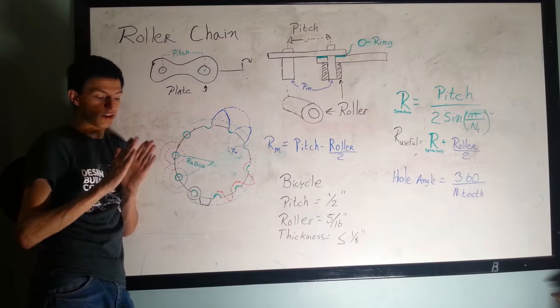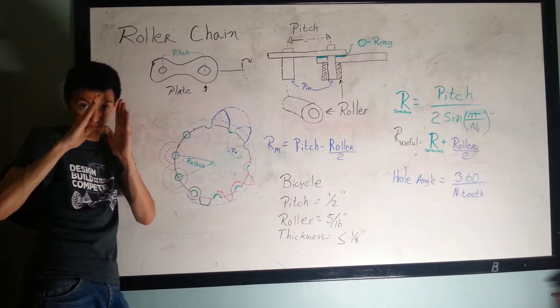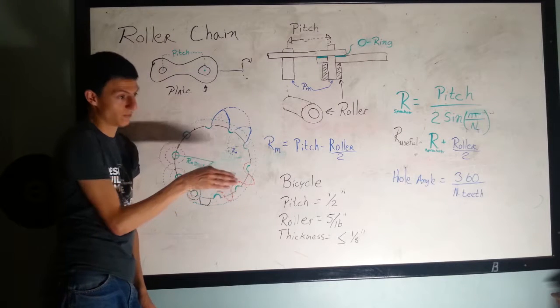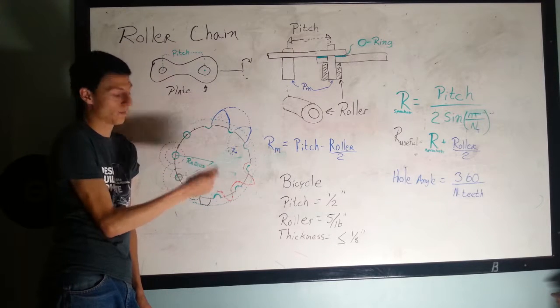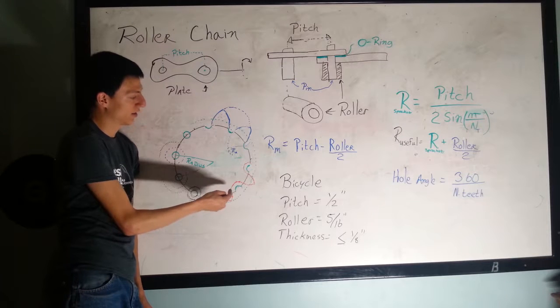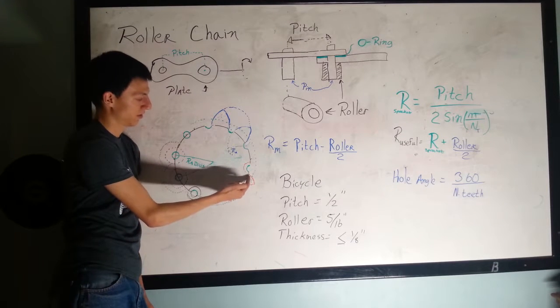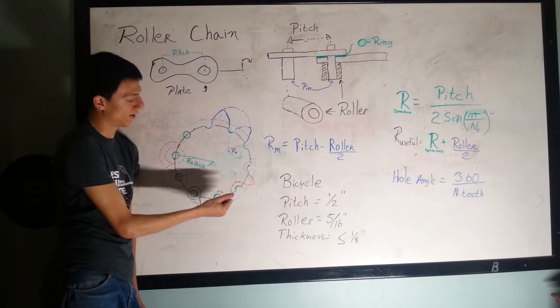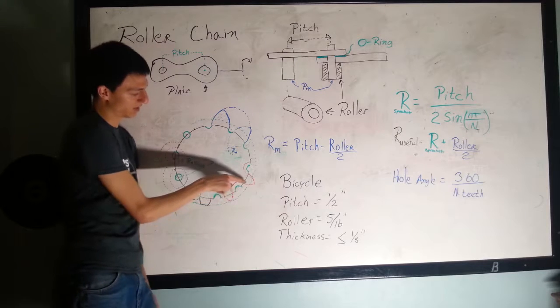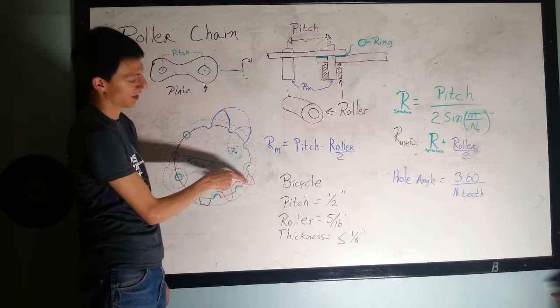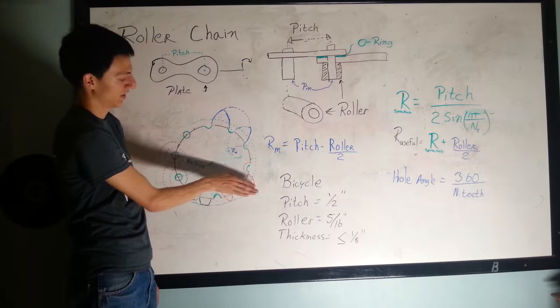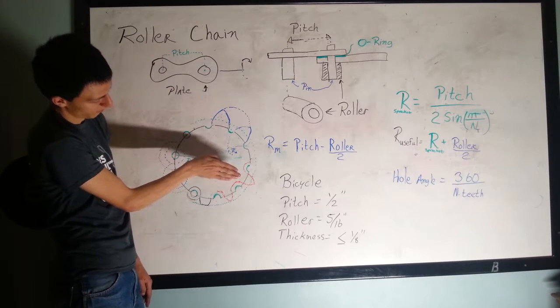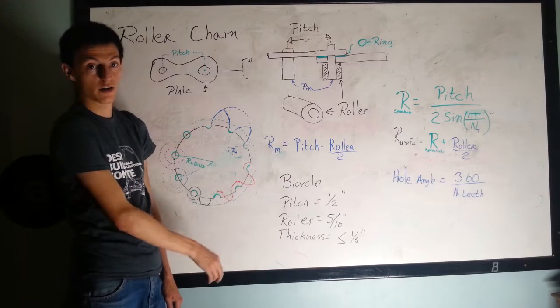You go to the store and look at bike chain, and the teeth aren't square—they're kind of bladed here. The thick part of the sprocket is always close to the roller because that's where the load is.